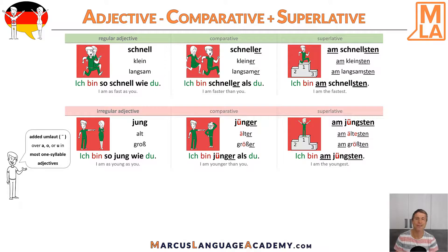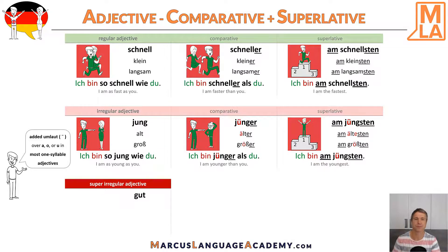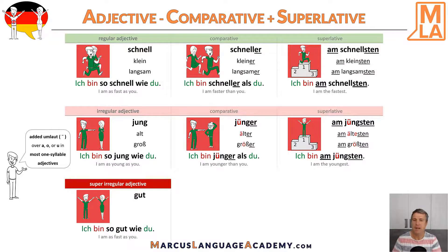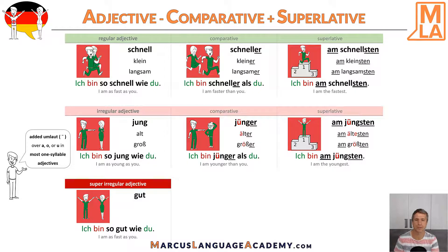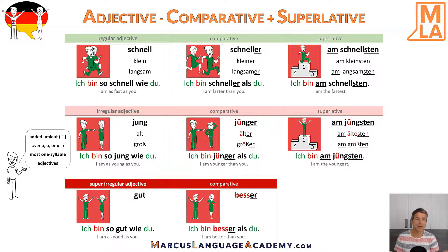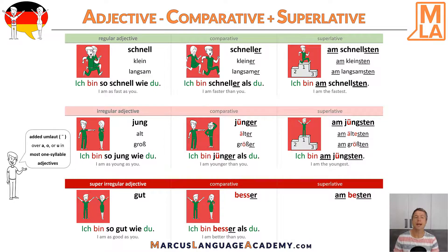But it gets even better, because there are still super irregular adjectives, such as 'gut' — good. In the original form everything is still okay: 'Ich bin so gut wie du' — I am as good as you. But that changes quite a lot in the comparative. The comparative is 'besser' — better — quite a change, like in English. And that's why our example sentence is 'Ich bin besser als du' — I am better than you. And the superlative is 'am besten' — the best. 'Ich bin am besten' — I am the best.